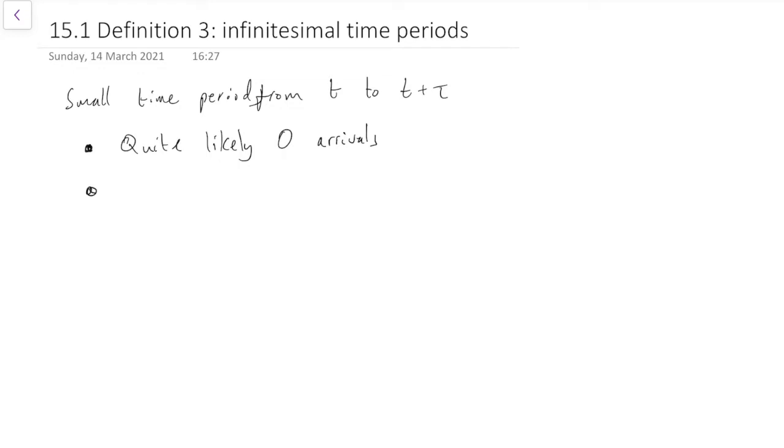On the other hand, arrivals do come sometimes. So we'll say that it's possible there will be one arrival. But the arrival is more likely to come in a slightly larger proportion of time than a slightly smaller. So let's say the possibility of one arrival is proportional to tau, or the length of time we're looking at. So the probability is proportional to tau, because tau is the length of time we're talking about. So if the length of time is twice as long, then maybe the probability of it arriving is twice as big.